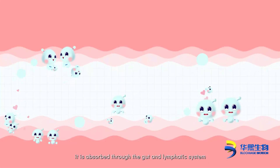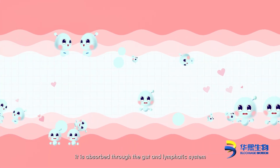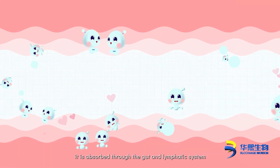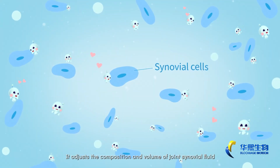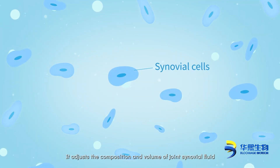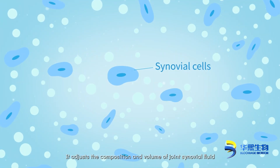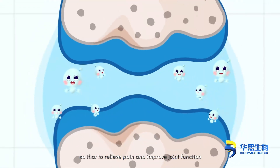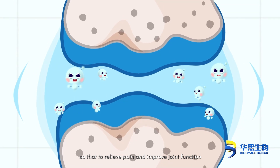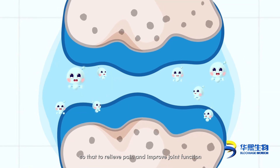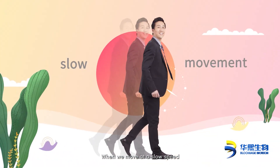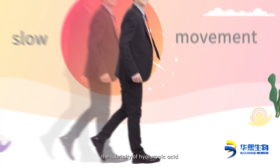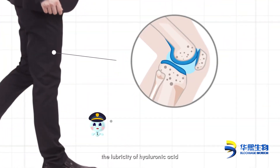When oral hyaluronic acid enters the body, it is absorbed through the gut and lymphatic system. It adjusts the composition and volume of joint synovial fluid, so as to relieve pain and improve joint function.